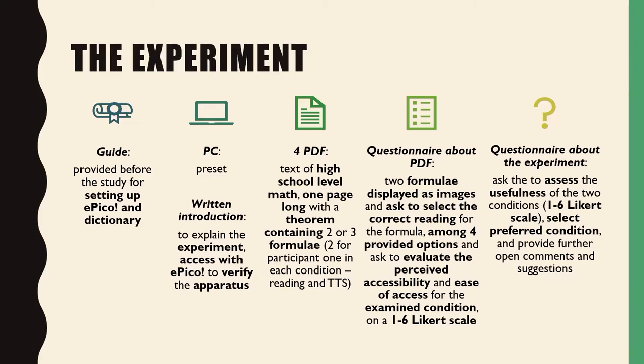We also asked them the ease of access and the perceived accessibility on a one-to-six likelihood scale. This was done twice. At the end of the experiment, we asked them to select the preferred condition and to assess the usefulness of both conditions on a one-to-six likelihood scale.